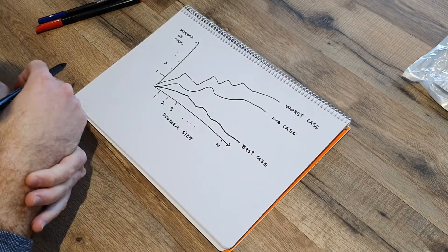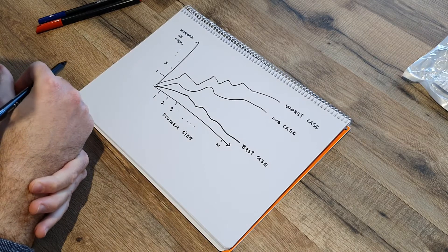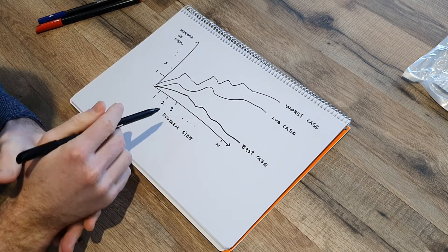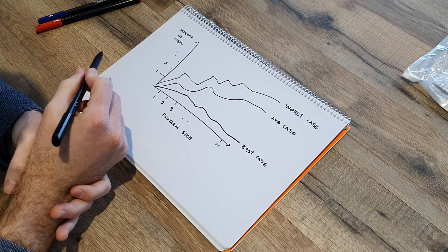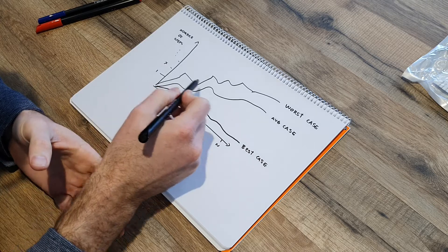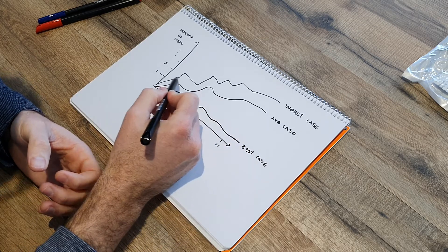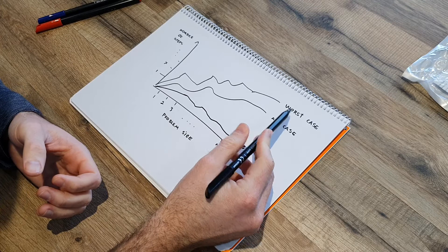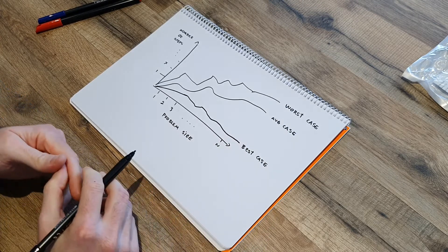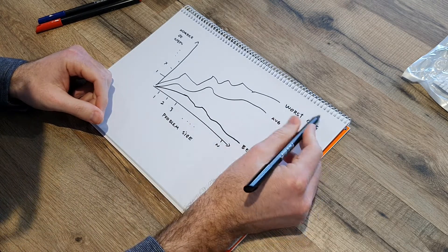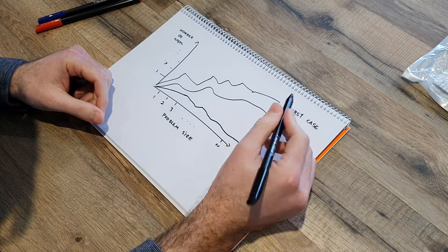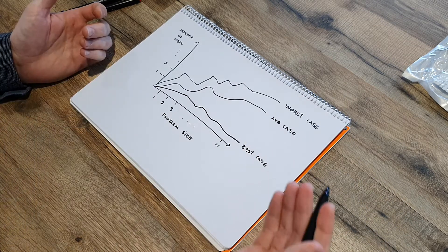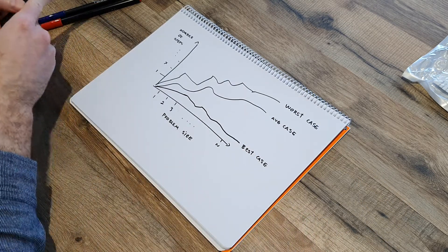So the worst case scenario is what we try to optimize upon. When you're using the RAM model, you can then chart the problem size against the number of steps and get a graph showing the number of steps based on that problem size for the average case, the worst case, or the best case. We're usually more interested in the worst case, but these are the three common cases that we are usually analyzing.